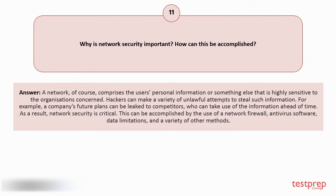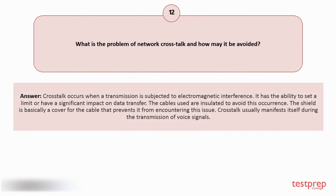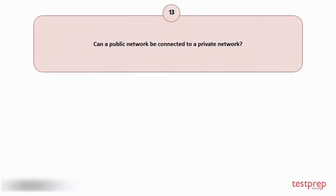Question number twelve: What is the problem of network crosstalk and how may it be avoided? Your answer is: Crosstalk occurs when a transmission is subjected to electromagnetic interference. It has the ability to significantly impact data transfer. The cables used are insulated to avoid this occurrence — the shield is basically a cover for the cable that prevents it from encountering this issue. Crosstalk usually manifests itself during the transmission of voice signals.